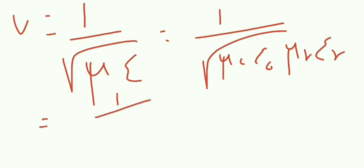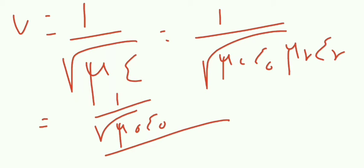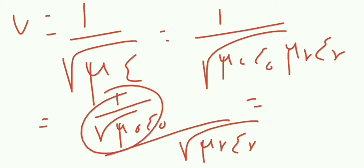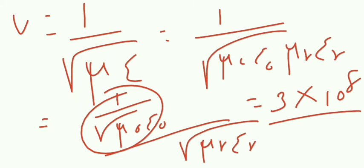Taking 1 by root of (mu naught times epsilon naught) as 3 into 10 power 8, and mu r is 1, epsilon is given as 4 epsilon naught. So epsilon r equals 4. Substituting these values, V equals 3 into 10 power 8 divided by root of (mu r times epsilon r).